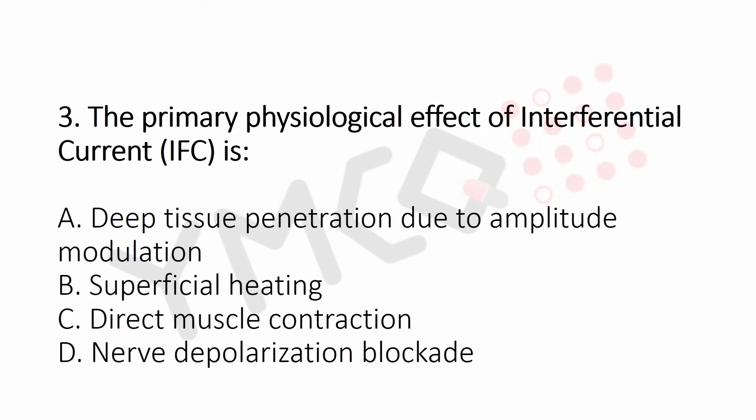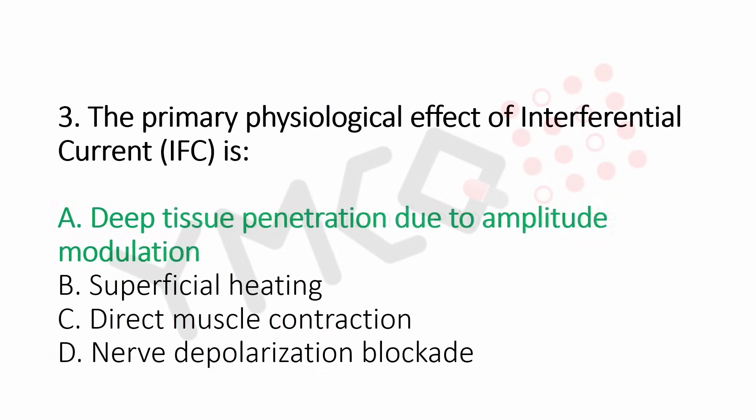Question 3: The primary physiological effect of interferential current (IFC) is — Option A: deep tissue penetration due to amplitude modulation, Option B: superficial heating, Option C: direct muscle contraction, Option D: nerve depolarization blockade. The answer is Option A: deep tissue penetration due to amplitude modulation.